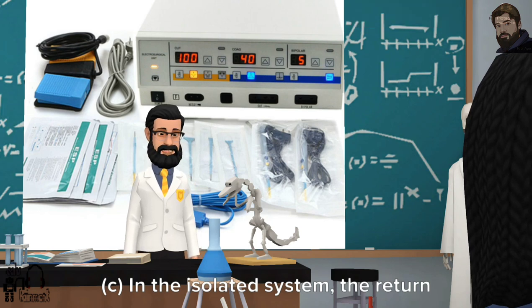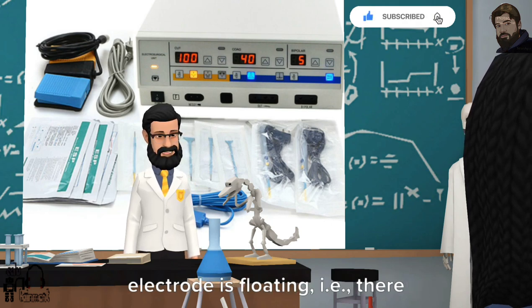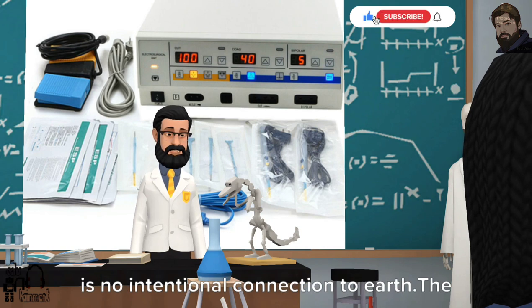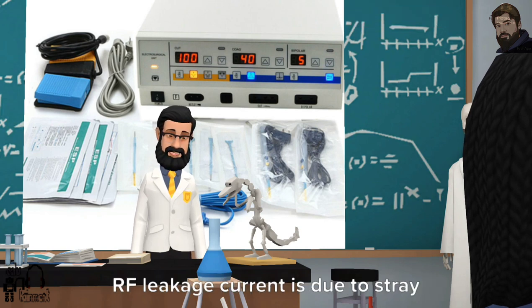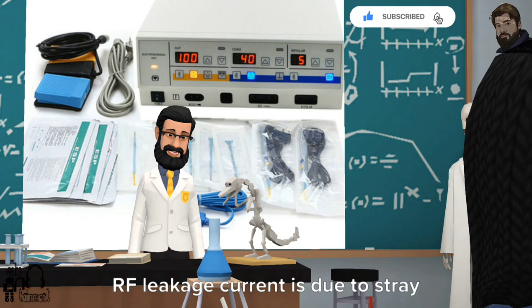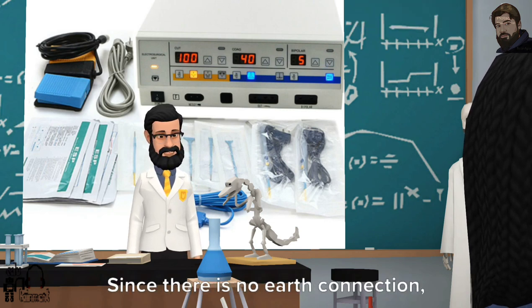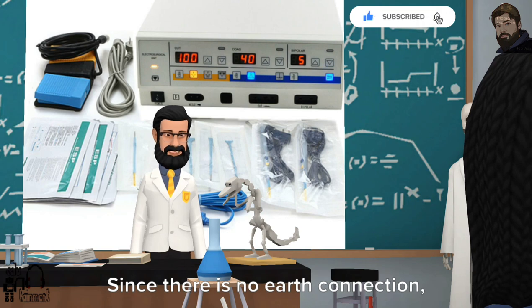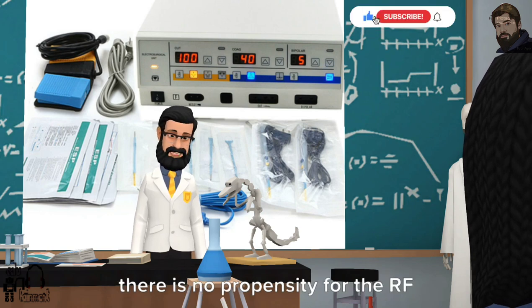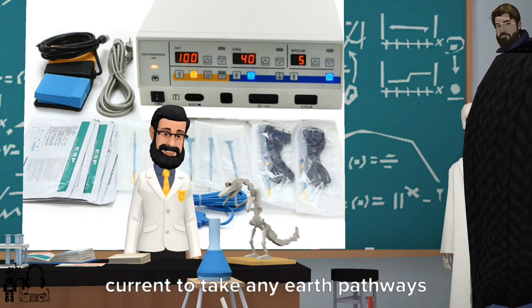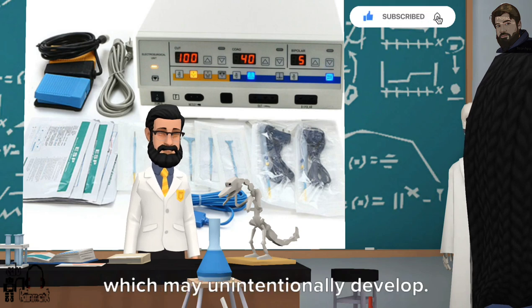In the isolated system, the return electrode is floating, that is, there is no intentional connection to earth. The RF leakage current is due to stray capacitance within the machine. Since there is no earth connection, there is no propensity for the RF current to take any earth pathways which may unintentionally develop. However, due to RF leakage pathways inherent in the equipment and leads, no machine can be considered as completely isolated.